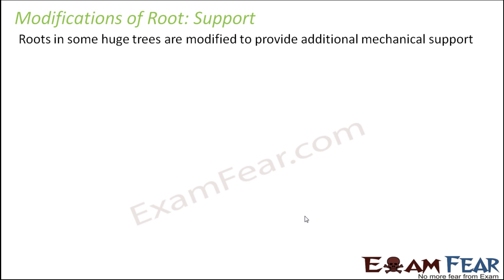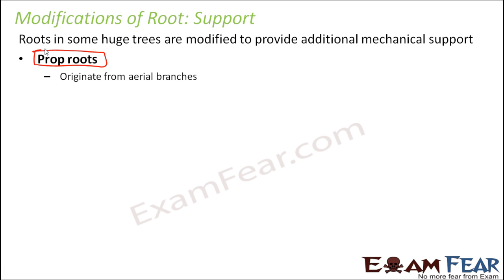Sometimes when trees become very huge, the basic anchorage given by roots is not enough, because the tree spreads in both directions. That is when some additional support is needed. One such modification of root is called prop roots, which originate from aerial branches.